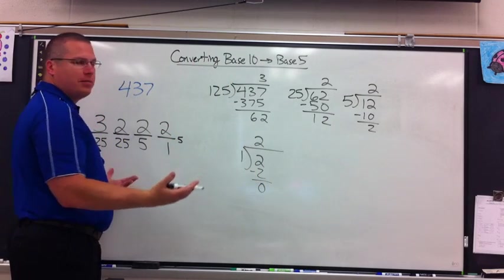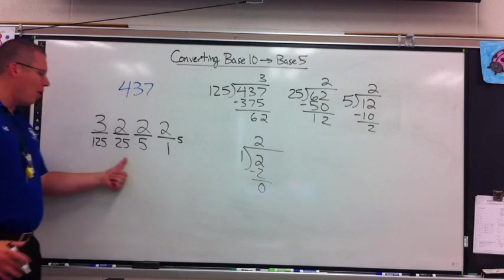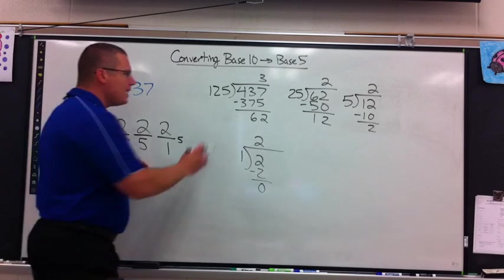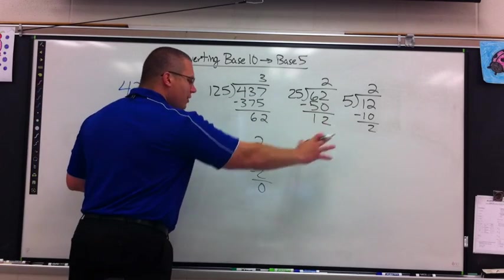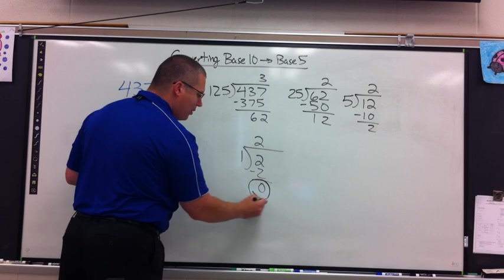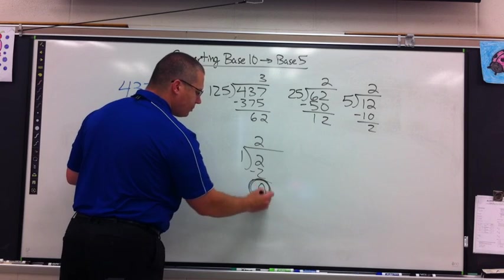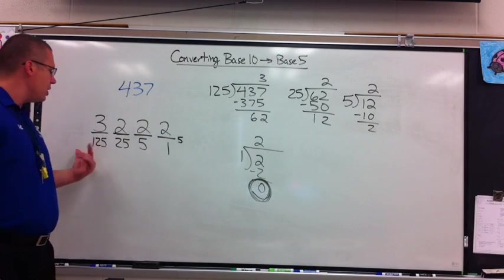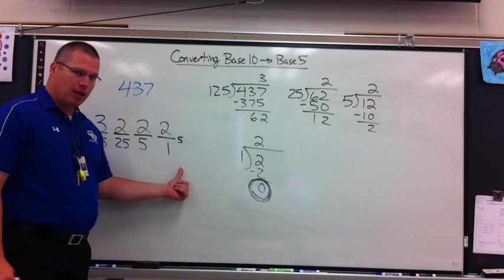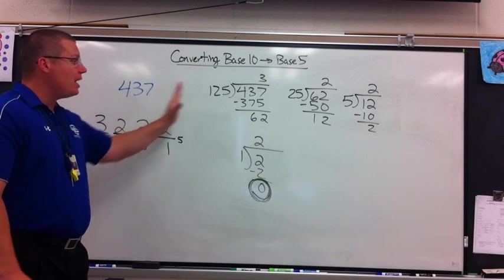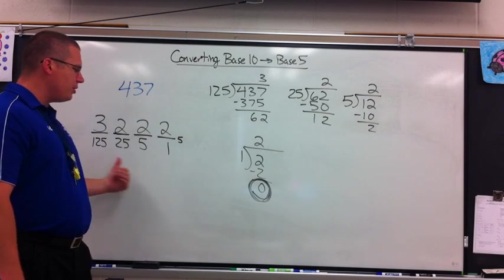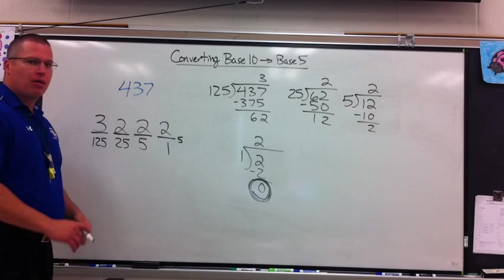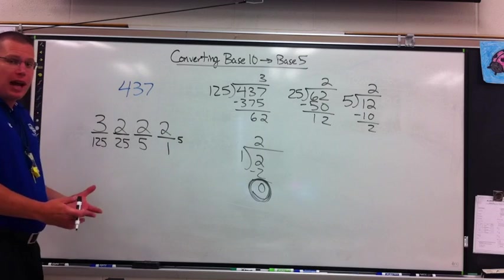Next up is how many 1s fit into my remainder. I know it's simple division — we write it just for the process, and it's 2. How do I know that I'm done? First of all, I filled up all my digits. Secondly, I did division until I got a remainder of 0. So there are two things to know when you're finished: did you fill up all the digits, and did you end up with a remainder of 0? You should have.